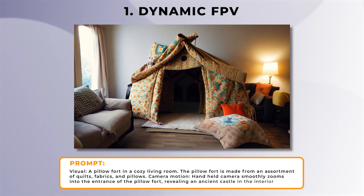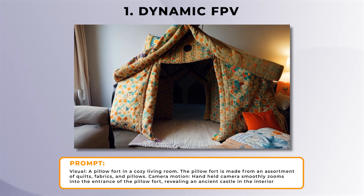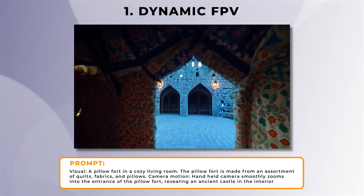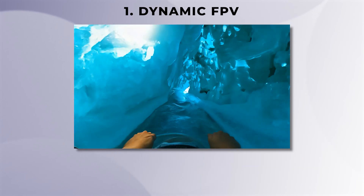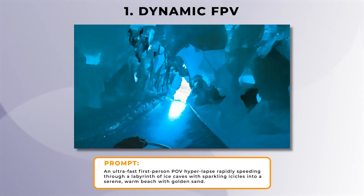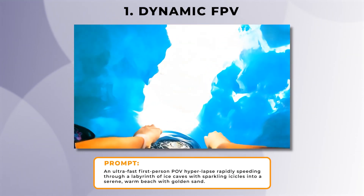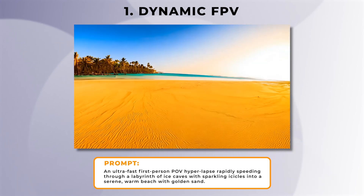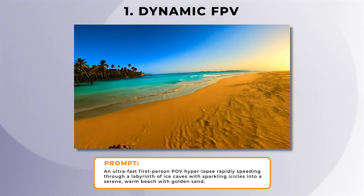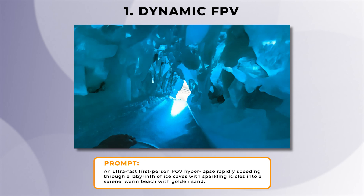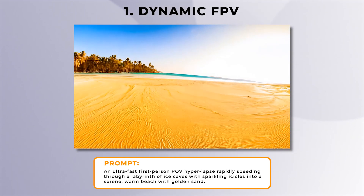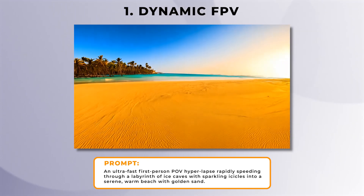And in this one, we start off in a cozy living room, going through a fort made of quilts, and through to an ancient castle. And in this one, it looks like someone's sliding down a kind of icy river, through a glacial tunnel, and into a tropical beach. It's amazing as it creates that overexposed look when you come through the tunnel, but then the exposure changes and you can see this tropical beach.